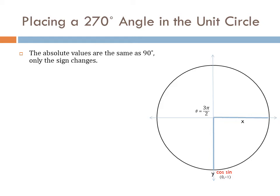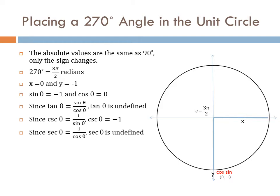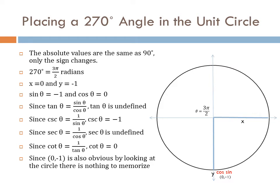Let's look at a 270 degree angle in a unit circle. The absolute values are the same as the 90 degree angle, so only the sign will change. 270 degrees is 3 pi over 2 radians. x is 0, y is negative 1. The sine is negative 1, the cosine is 0. The tangent, which is sine over cosine, is undefined. The cosecant is 1 over the sine, so that is negative 1. The secant is 1 over the cosine, so the secant is undefined. The cotangent is 1 over the tangent, so the cotangent is 0. Since the point (0, −1) is obvious thinking about how the circle is constructed, there is nothing to memorize.